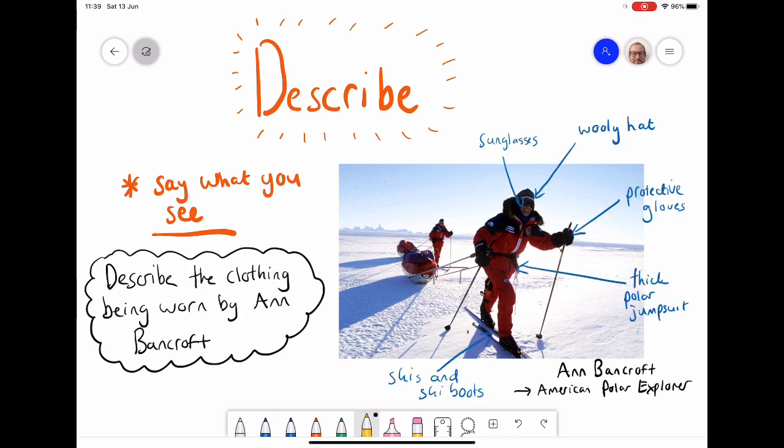In the quick observations I've done for this, I'm not telling you why she's wearing them, but I'm just telling you what she's wearing. Sunglasses, woolly hat, a polar jumpsuit, skis and ski boots. That is basically saying what I've seen in the picture. If I was answering that question written down, I would just write down simply the things that I'm seeing.